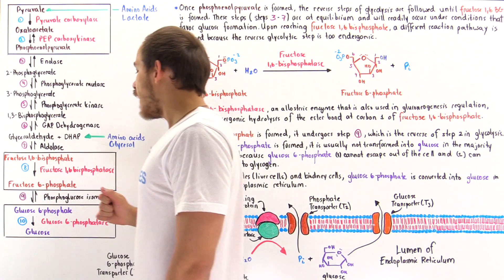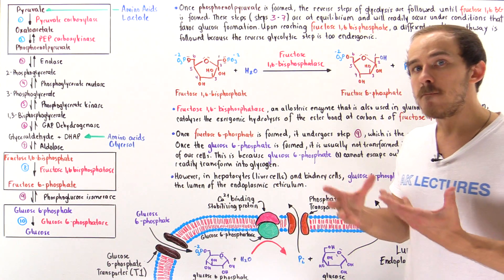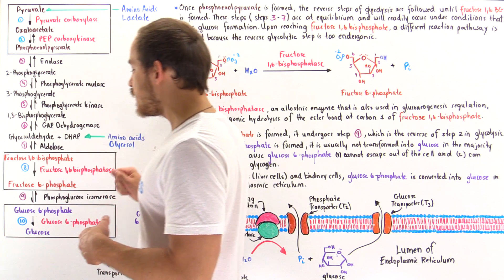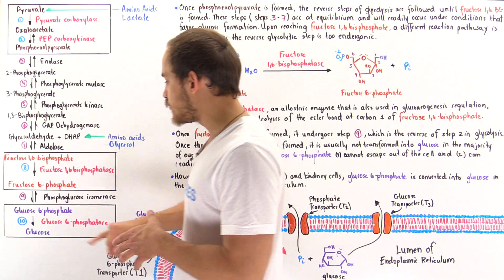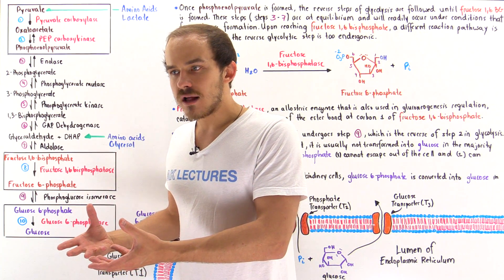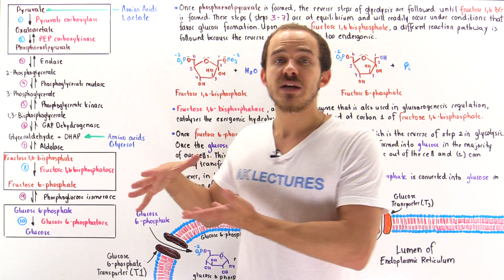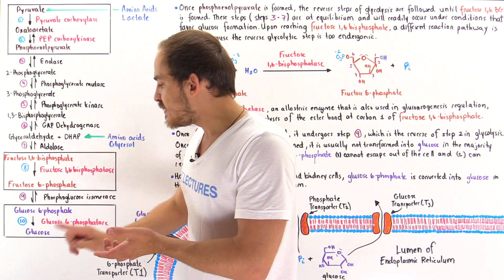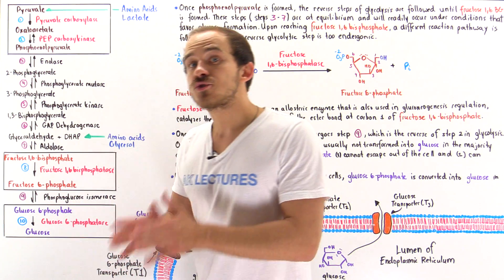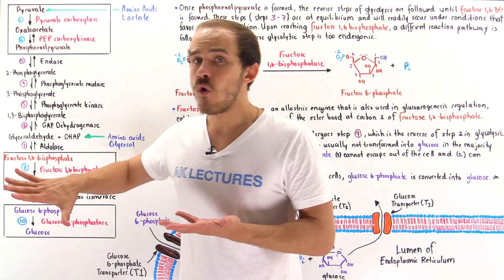Once glucose 6-phosphate is formed, what happens next depends on the type of cell. In the majority of cells, such as muscle cells, glucose 6-phosphate is not transformed further into glucose. In skeletal muscle cells, once glucose 6-phosphate is formed, it can be used to form glucose, or used to form pyruvate for energy, but more importantly it can be stored as glycogen. Glucose can leave the cell freely, but glucose 6-phosphate is trapped within the cell and can be easily transformed into glycogen.